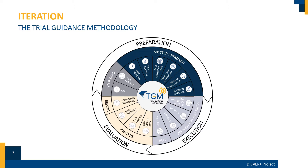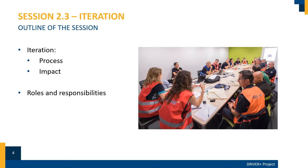When you adjust or detail out one thing, you probably have to go to another step and adjust or detail out that step as well. Although it mainly refers to the preparation phase, iteration can also take place in the execution and evaluation phase. First, we talk about the iteration process and the impact within the iteration. Then we quickly present the roles and responsibilities in your trial committee. But beforehand, we take another look at the user story.